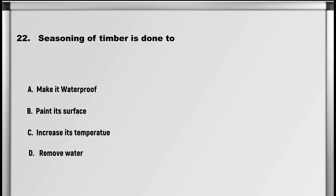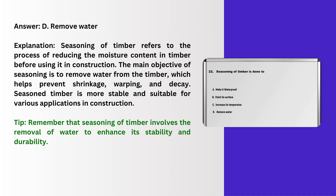Let's move on to question number 22: Seasoning of timber is done to: A. Make it waterproof, B. Paint its surface, C. Increase its temperature, D. Remove water. Answer: D. Remove water.